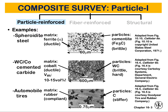The bonding between phases differs between large particle and dispersion strengthened composites. In dispersion strengthened composites the interaction is at the atomic level, while in large particle composites it is at the macro scale. Now we need to discuss how we quantify mechanical properties — we know we are strengthening the matrix phase with the particle phase, but how do we measure this?